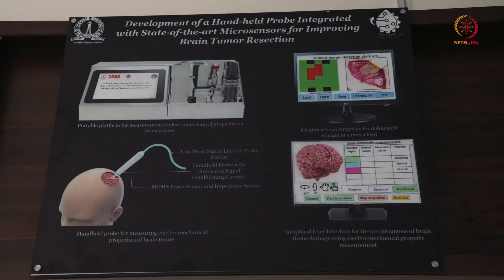Coming to the next image, this is a handheld probe integrated with micro sensors for improved brain tumor resection. Here there is a good amount of packaging with the fabricated device. On the top right image you can see one fabricated device that can be useful to delineate or understand the tumor margin, and it is connected through a probe that the surgeon can use during an operation.